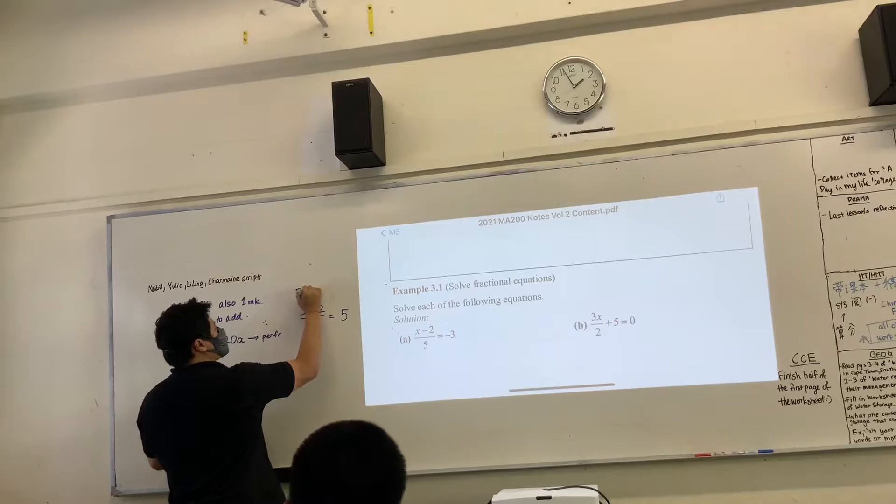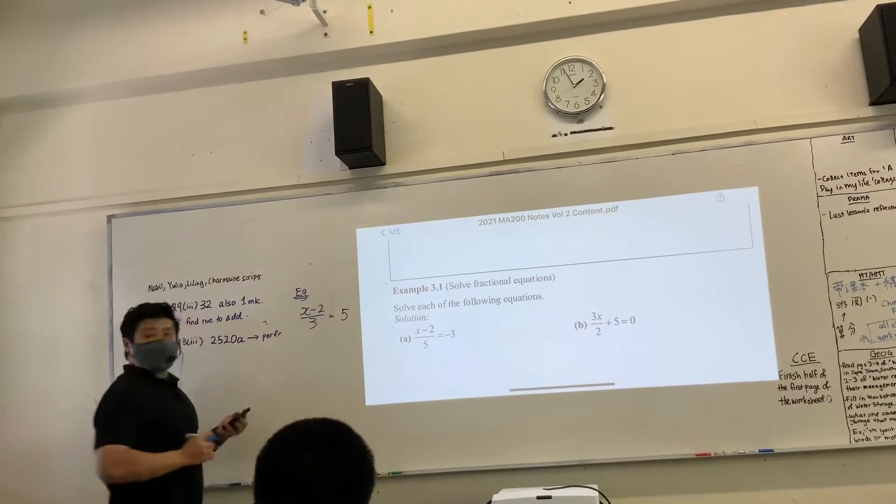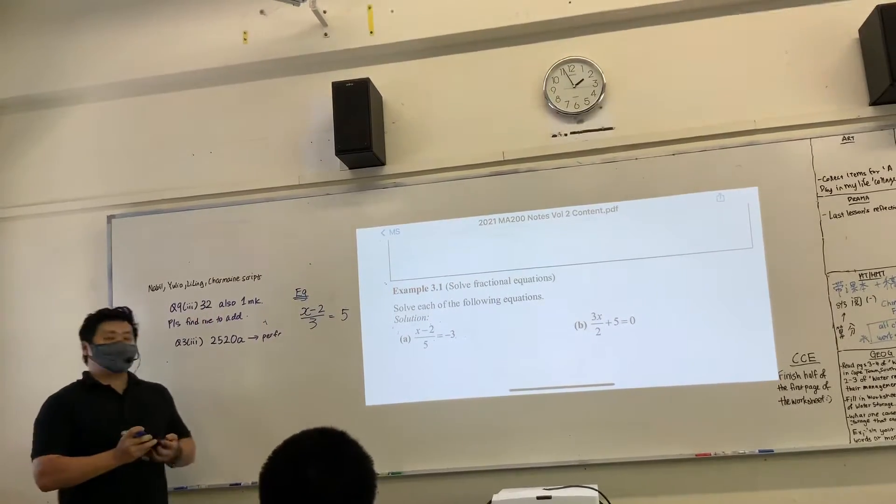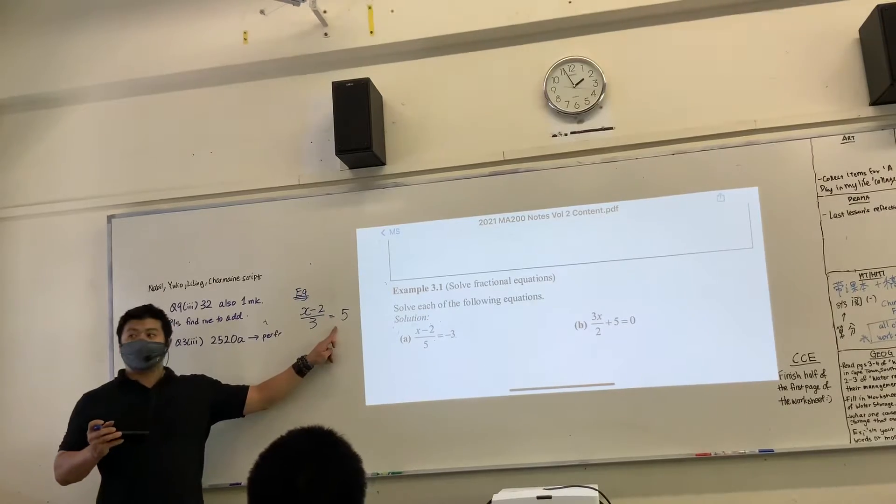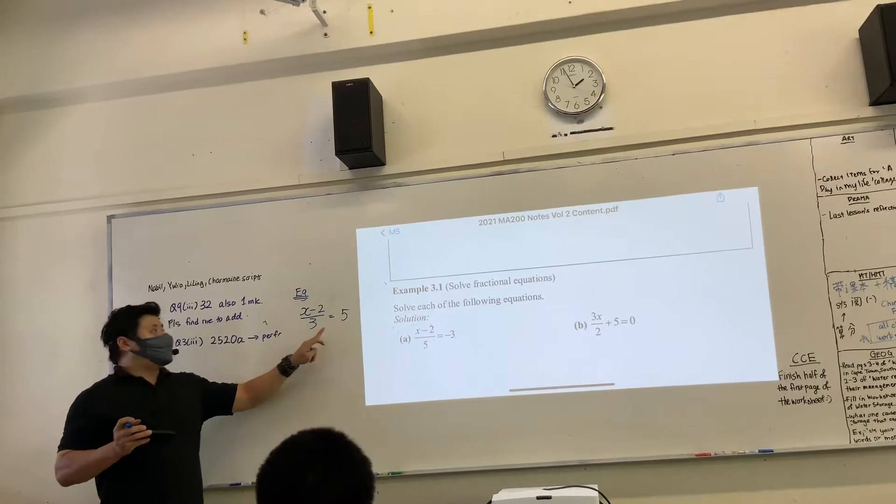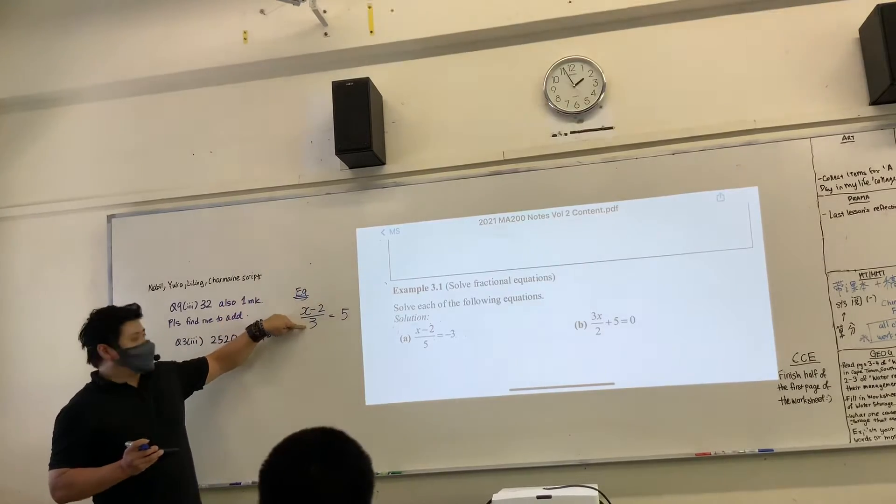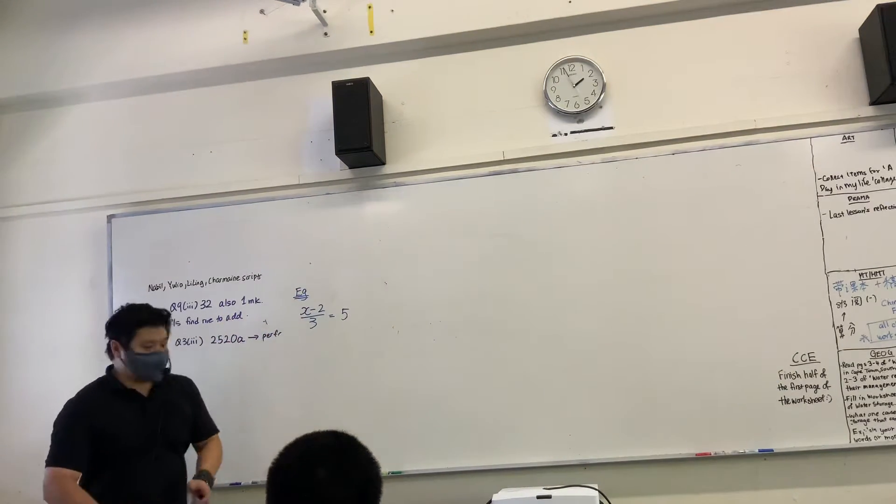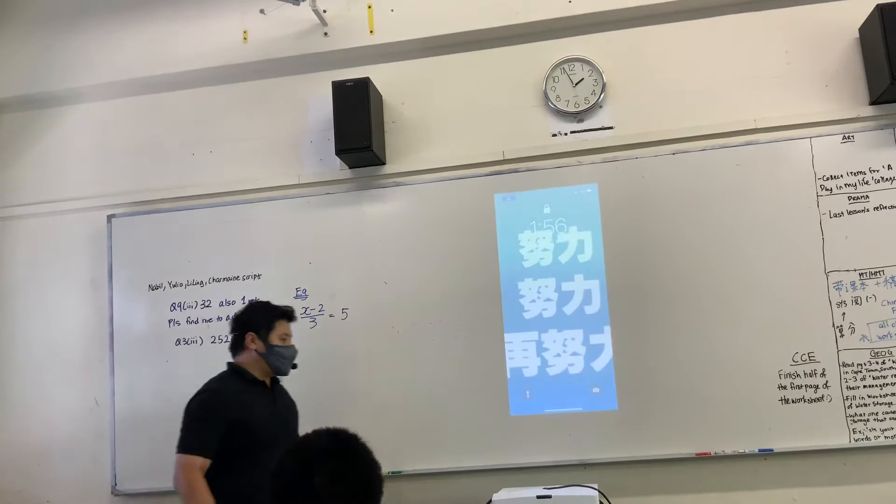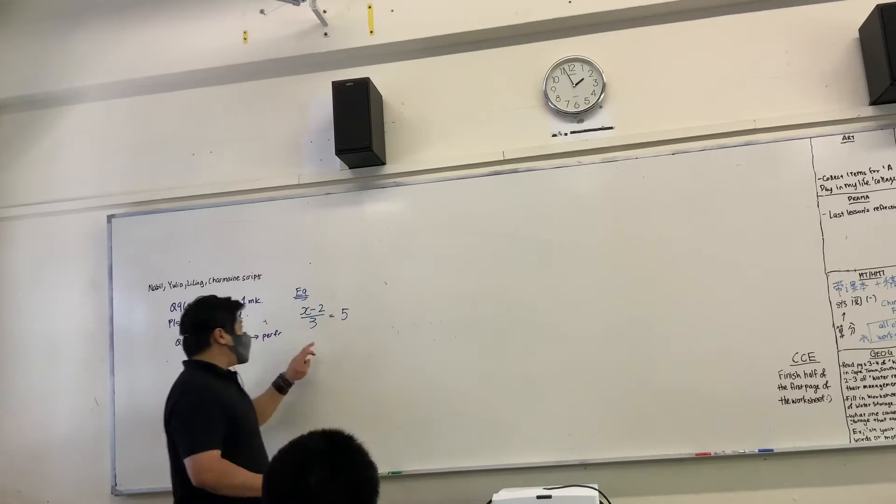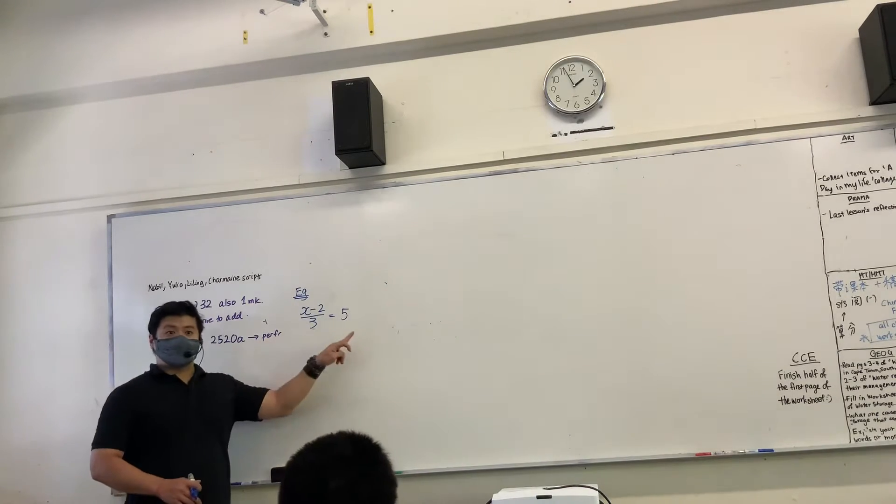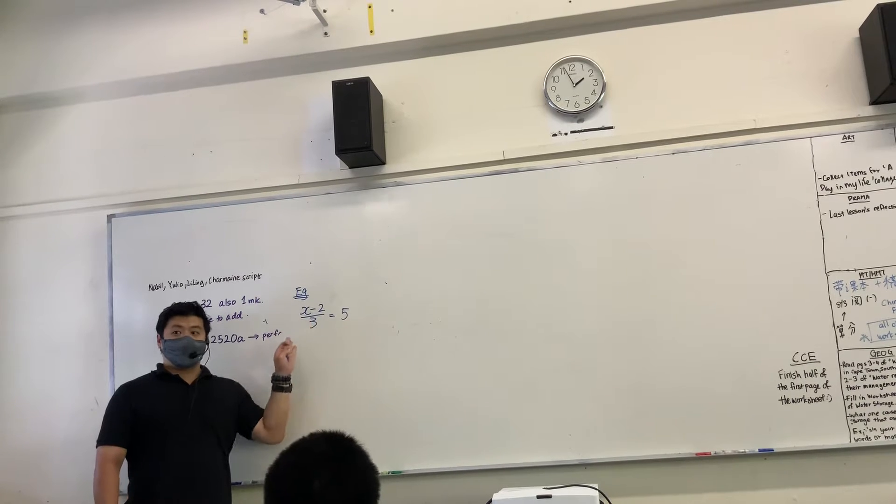Example 1. Let me show you. For example, x minus 2 over 3 equals 5. If you look at the equation, one of the things I can do is multiply by 3 to both sides. Then I will cancel the 3, correct? Also what I can do is multiply by 3 to both sides.